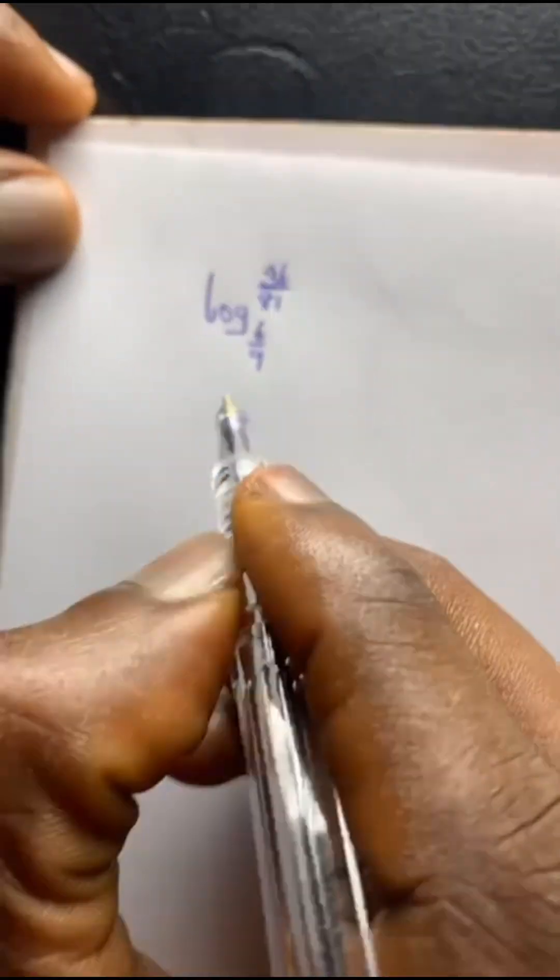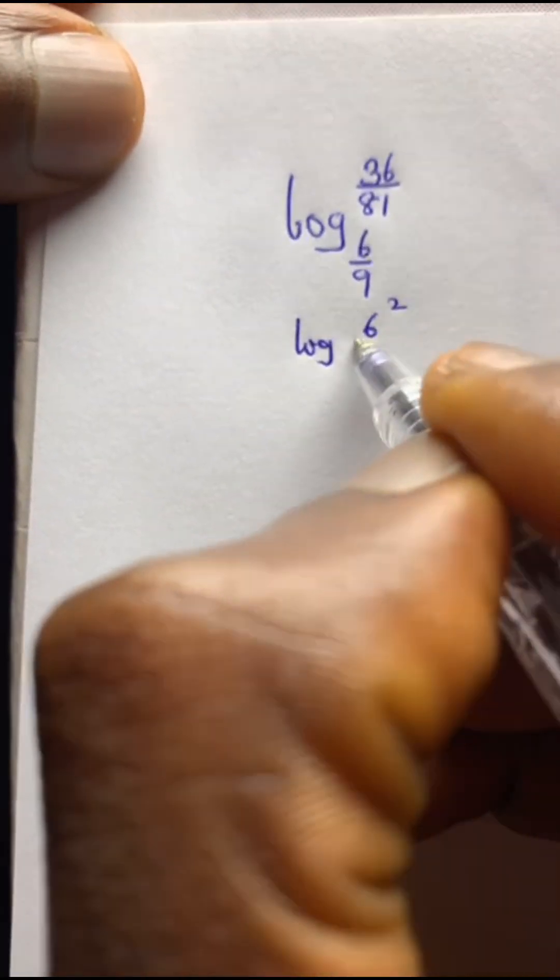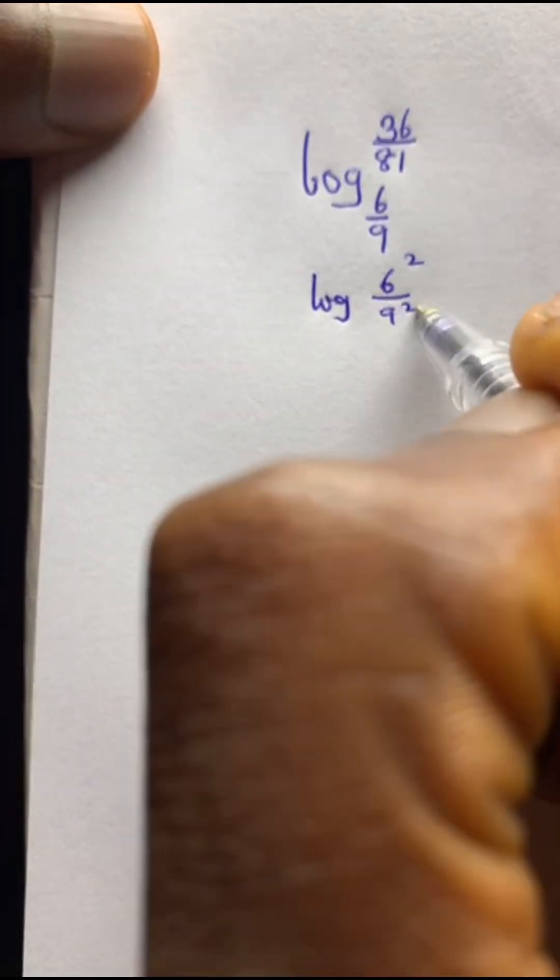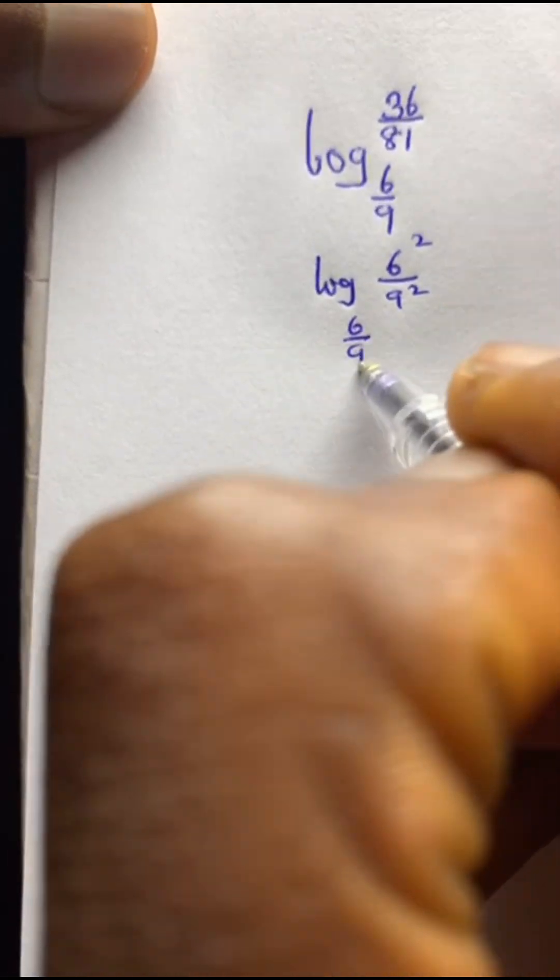Now you say, log of, take this, this is 6 squared over 9 squared to the base of 6 over 9.